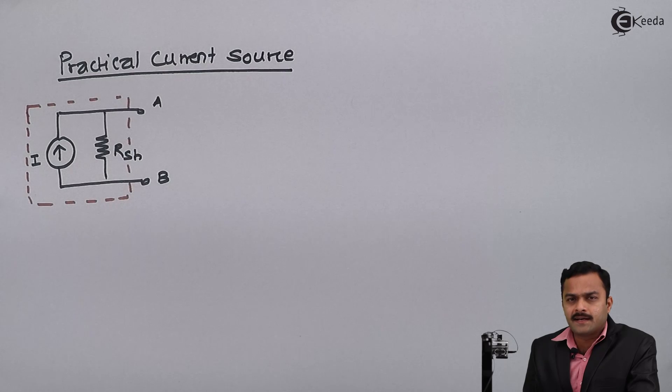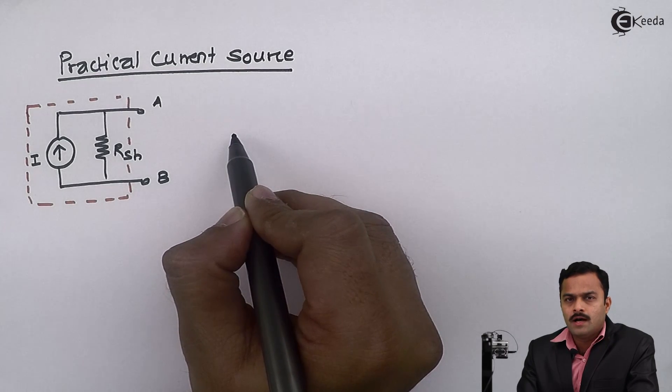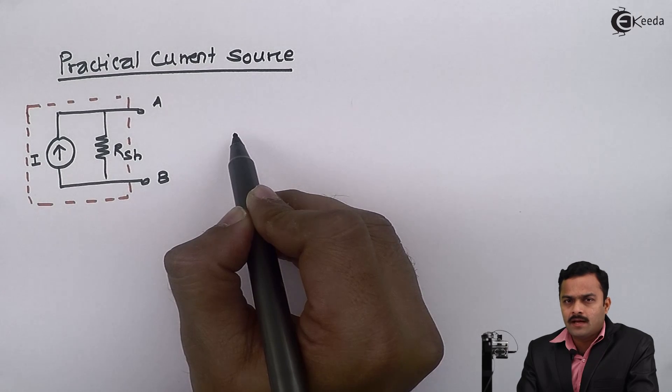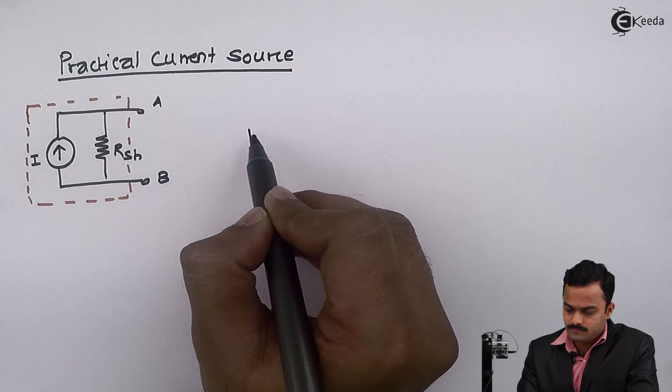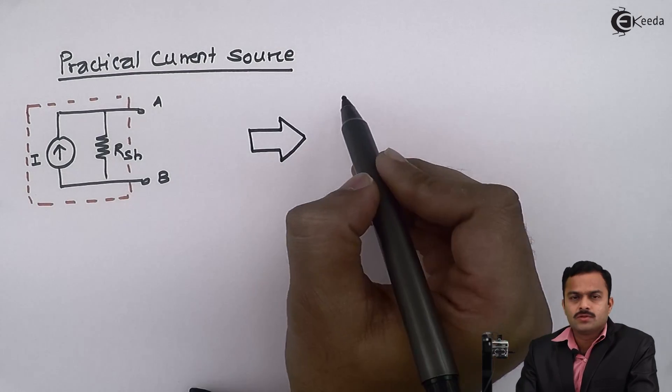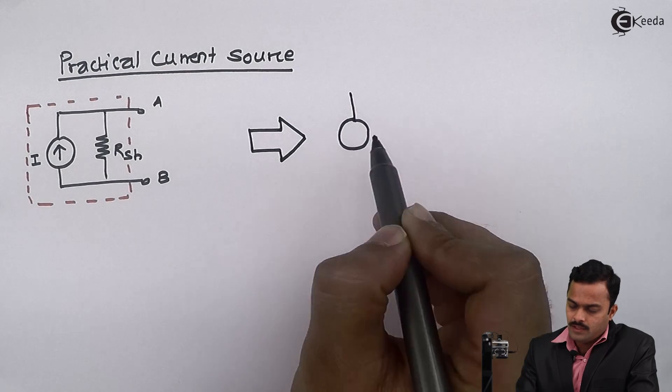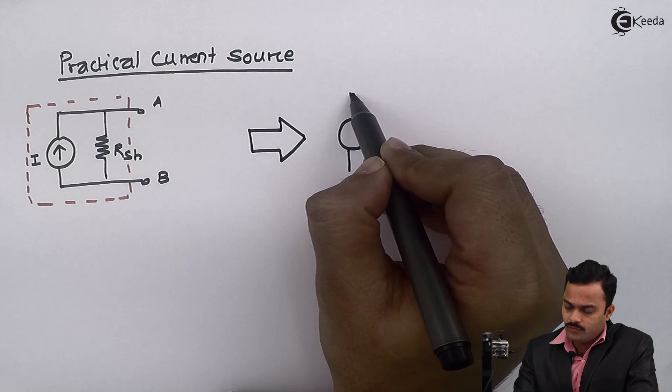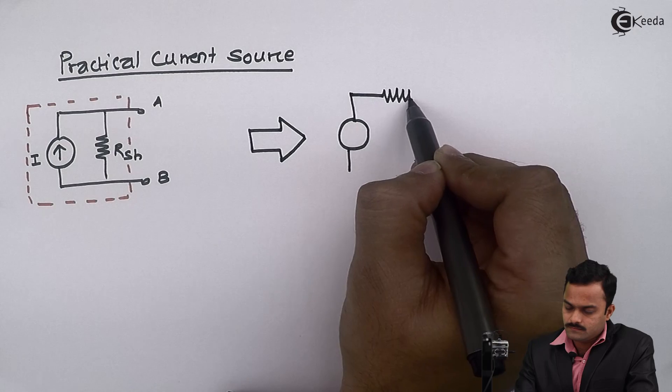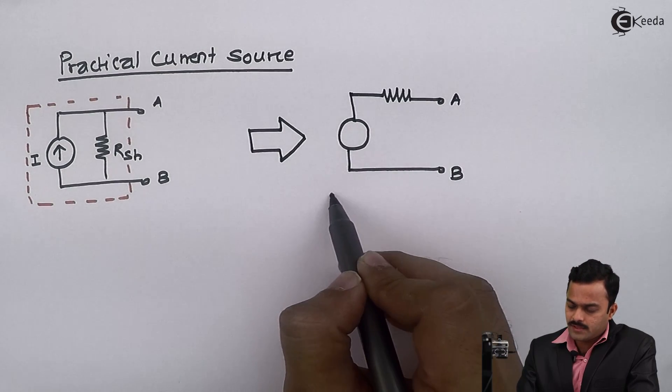This practical current source I am supposed to transform to an equivalent practical voltage source. First I will draw practical voltage source. It is a practical voltage source.